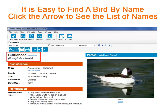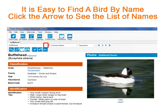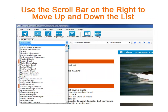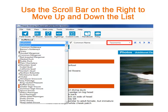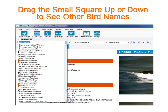When you open the program, you see the last bird you were looking at. You can use the tab above to find a different bird. Just click the small black arrow and here's a list of all the birds. Use the slider on the right to move up or down this list. Notice that this list is arranged in taxonomic order. Drag and drop the small box on the right-hand side to move up or down the list of birds.